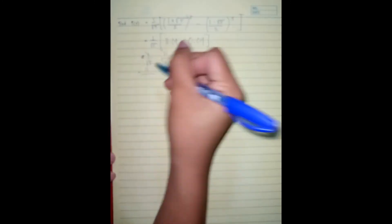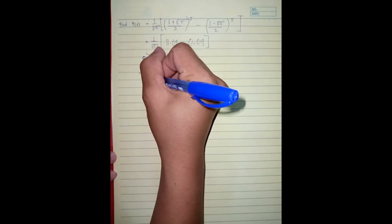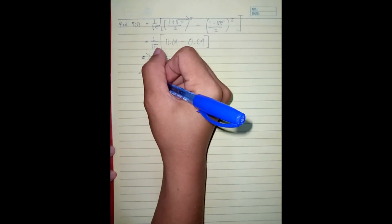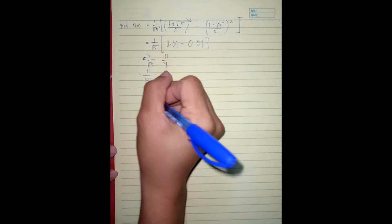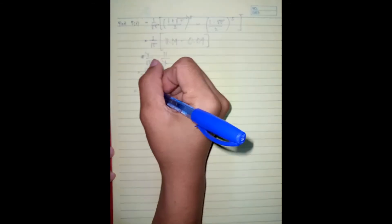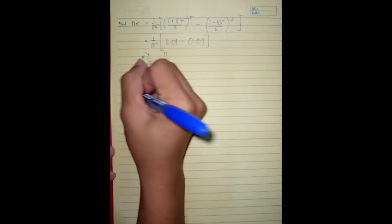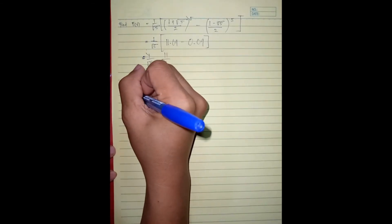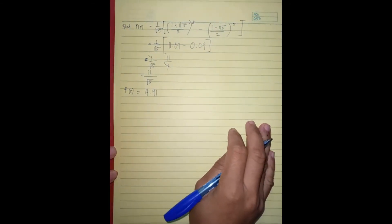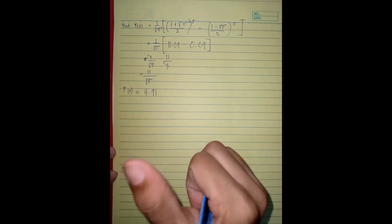Then eleven divided by the square root of five is equals 4.91. So our Fibonacci five is equals to 4.91. That's all.